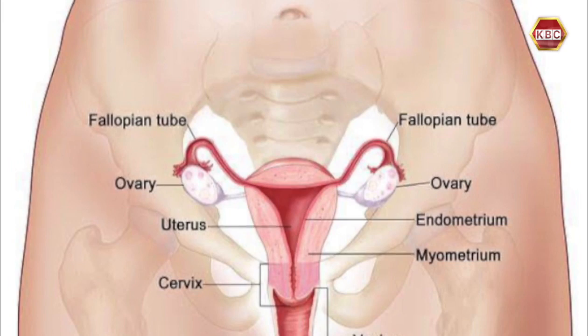The ovaries produce eggs and are located on both sides — right and left — as part of the reproductive organs in a woman's body. That means if there are no ovaries, there is no fertility for a woman.